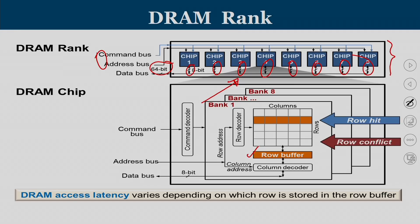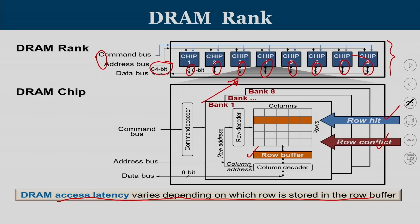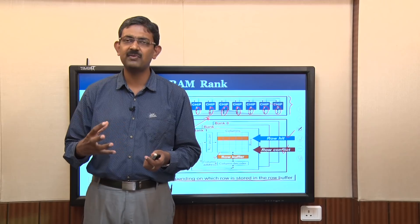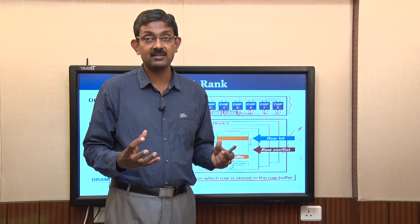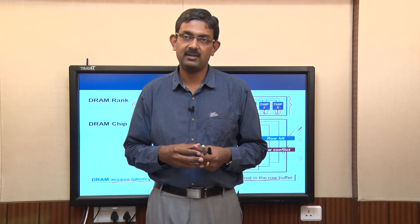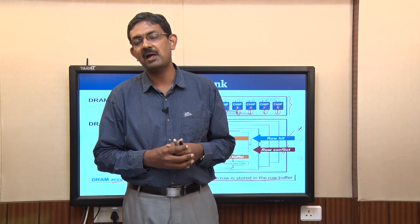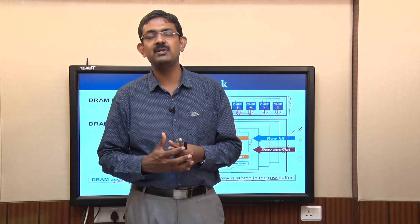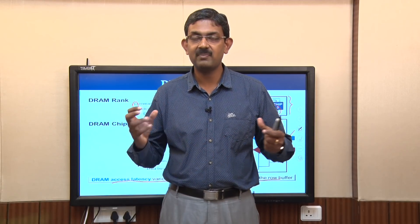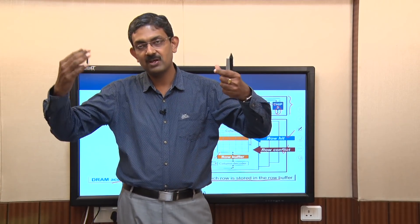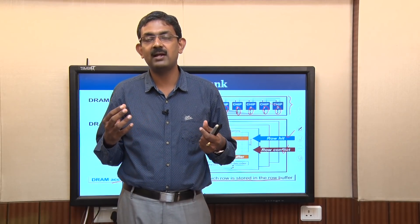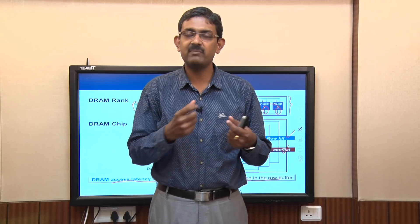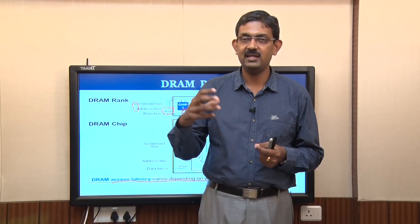Depending on the addresses, data is extracted from the appropriate row buffer. There can be row hits as well as row conflicts, and DRAM access latency varies depending on which row is stored in the row buffer. Correlating with interleaving: if two requests go to different banks, with multiple read/write ports parallelism is achievable. If two requests to the DRAM system belong to two different banks, both banks can be activated in parallel — the activate command loads the corresponding row into the row buffer, then the column address extracts the data.